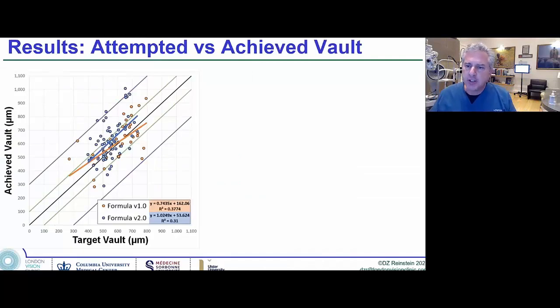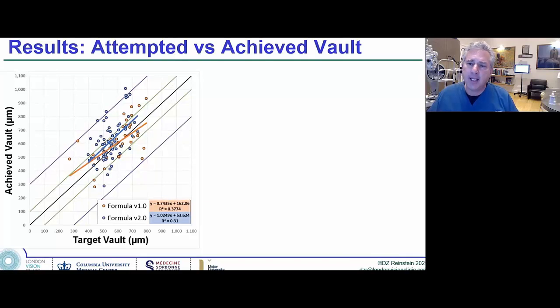If we look at the regression, not many have plotted these graphs. I know that Takashi can do that now, but we were the very first to do this. No one talks about the vault being within reason, like between 250 and 1,000, but we're actually looking like refractive surgeons at attempted versus achieved. You can see that we had a little bit of a tilt in our formula one, but actually with the more eyes, this now became a rather one-to-one correlation.